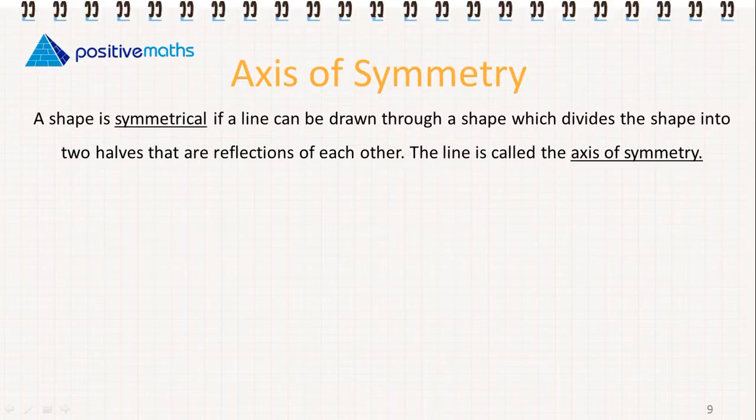A shape is symmetrical if a line can be drawn through a shape which divides the shape into two halves that are reflections of each other. The line is called the axis of symmetry.